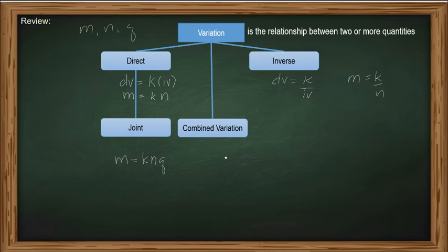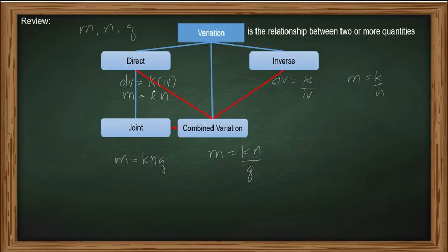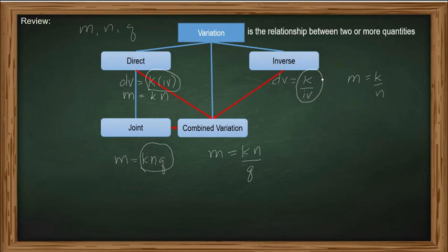How about combined variation? Combined variation is a combination of direct variation, joint variation, and inverse variation. For example, M varies directly as N and inversely as Q. Remember that the operation between the constant and the independent variable in both direct and joint is multiplication. Whenever you hear 'varies directly' or 'varies jointly,' it should be multiplication. For inverse, the operation is division, so the variable must be written in the denominator.